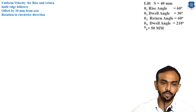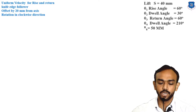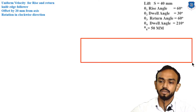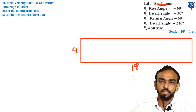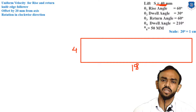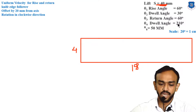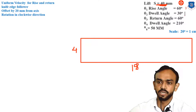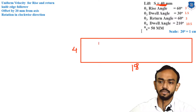Now first we have to make the displacement diagram for uniform velocity. You already know how to draw the displacement diagram — there will be a rectangle whose length will be 18 cm and height will depend on the rise or lift. Lift is 40 mm, so 4 cm. We have taken the scale of 20 degrees equal to 1 cm. The rectangle is partitioned into four parts: 60 degrees equals 3 cm, 30 degrees equals 1.5 cm, 60 degrees equals 3 cm, and 210 degrees equals 10.5 cm.